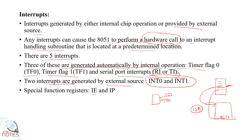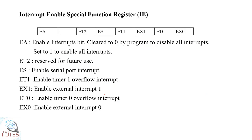There are special function registers: IE and IP. IE means Interrupt Enable — it is a special function register that actually controls the interrupts. The relevant flags are TF0, TF1, serial, INT0, and INT1 bar, which are used to enable and disable the interrupts.